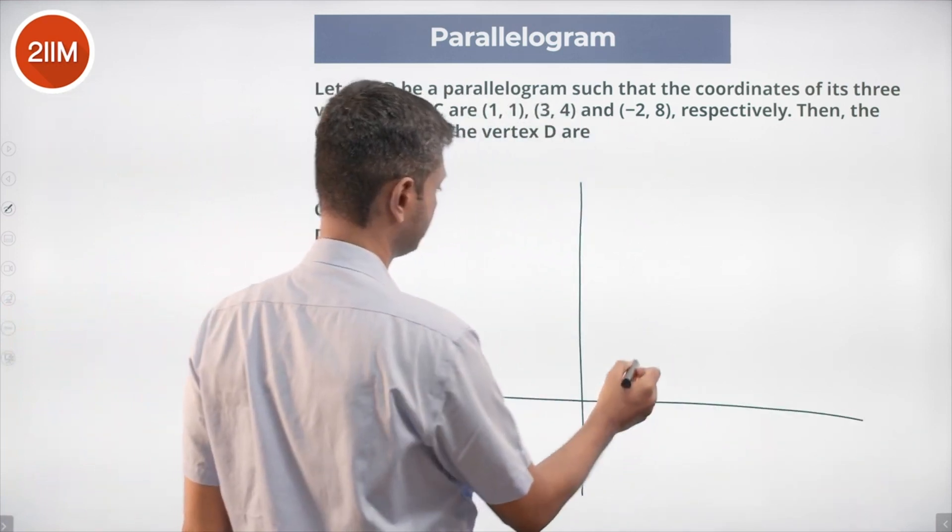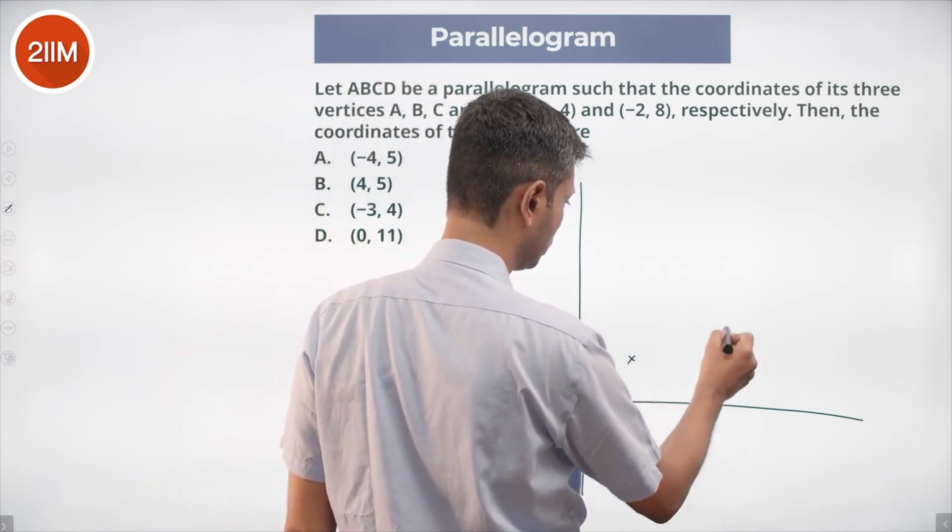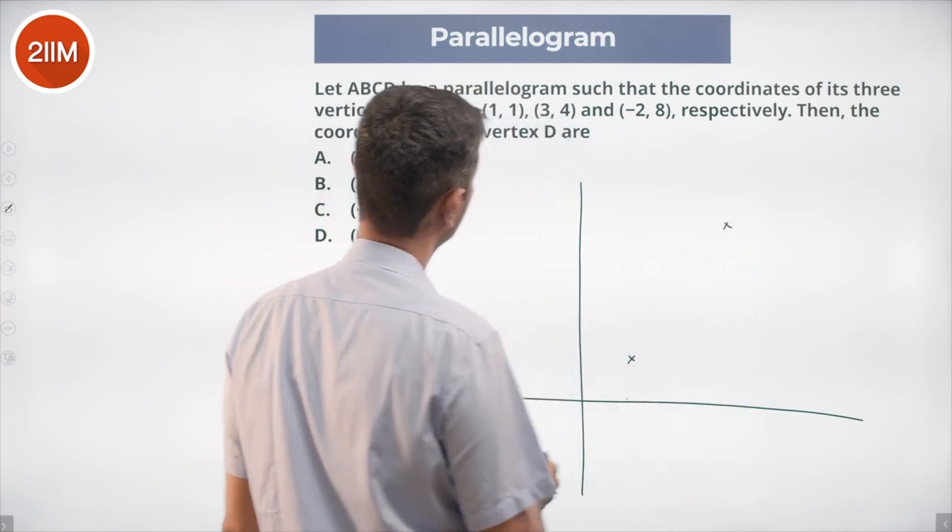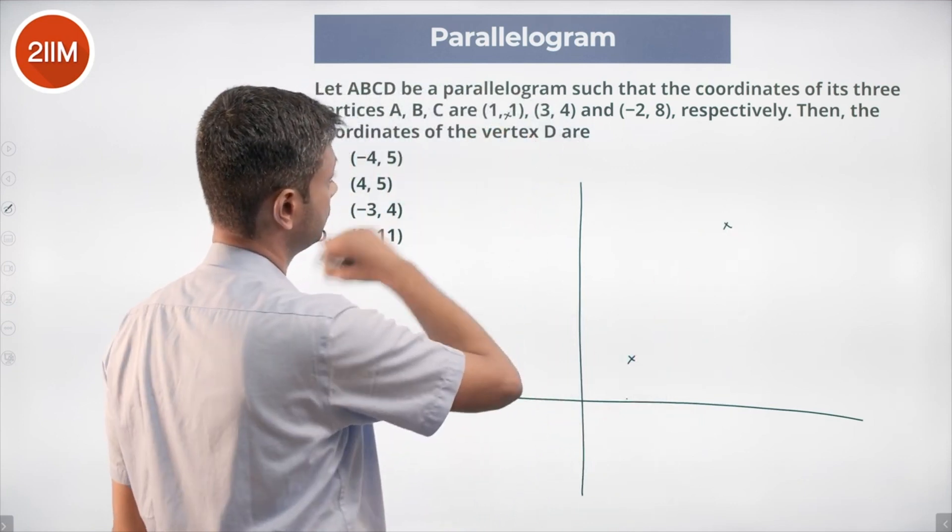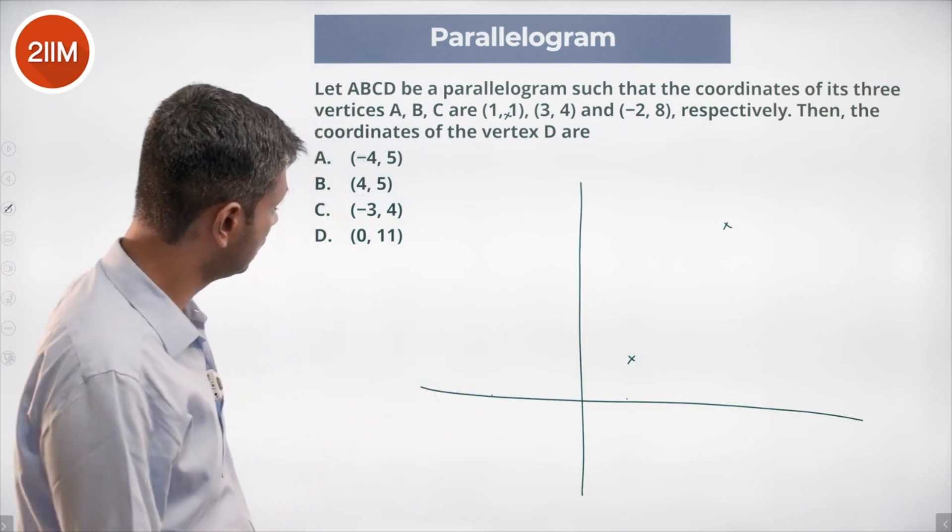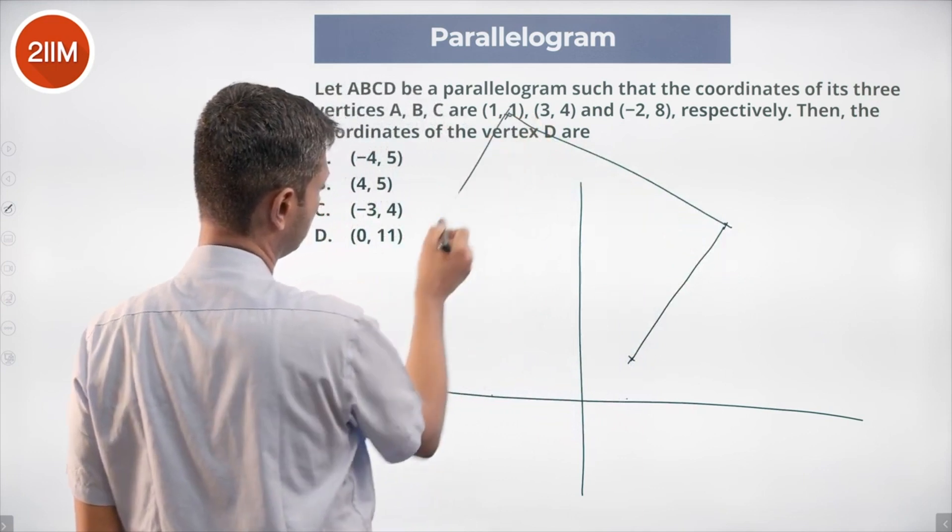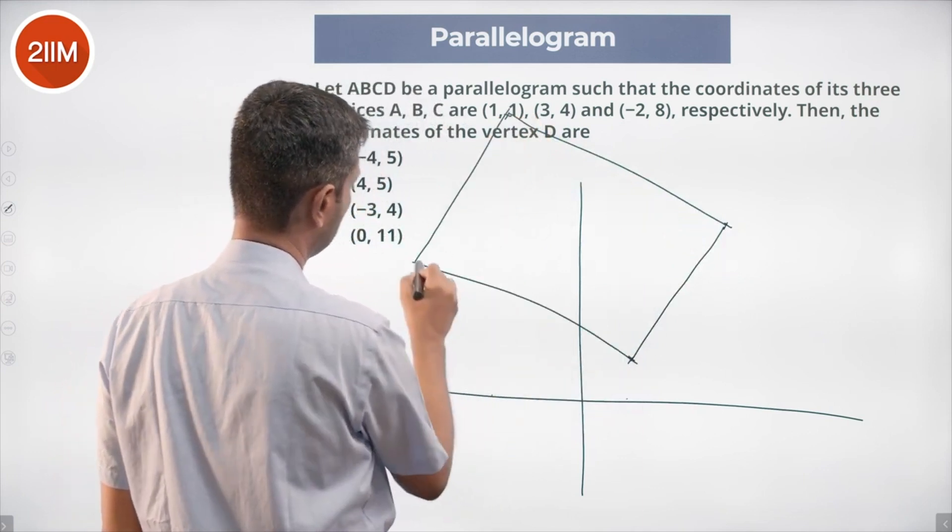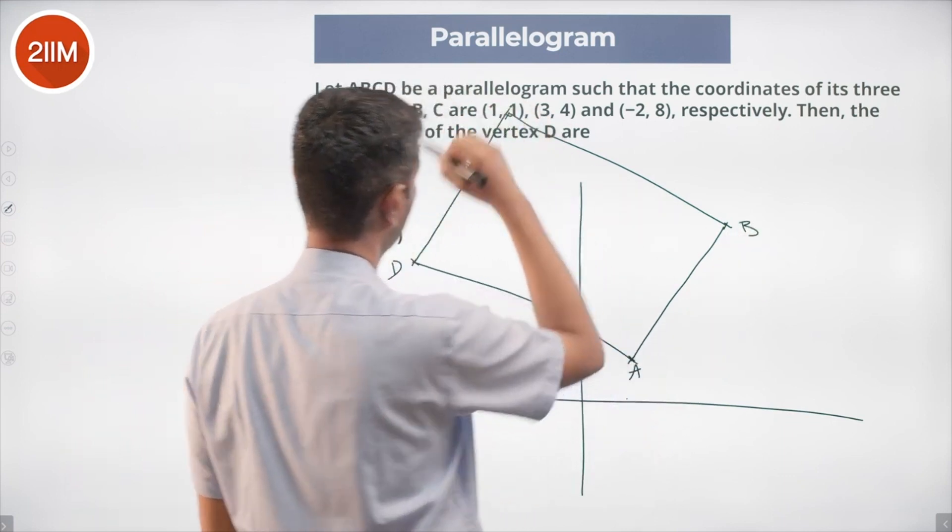A is at (1,1), B is at (3,4), and C is at (-2,8), somewhere here. This is a parallelogram. It goes like this, like this. It should be D. This is A, B, C, somewhere there it should be D.